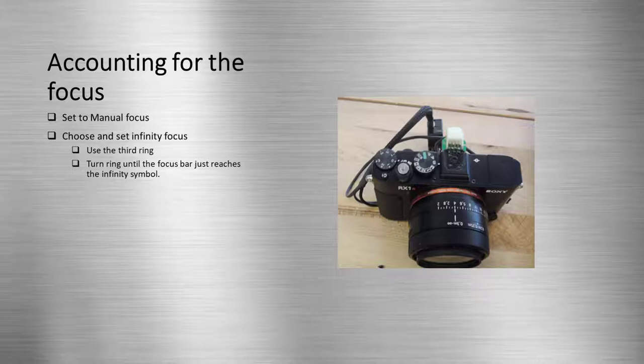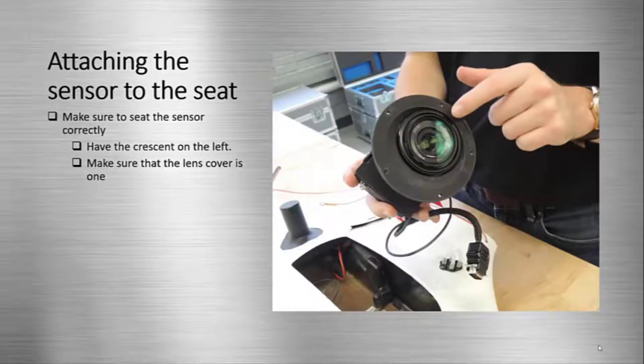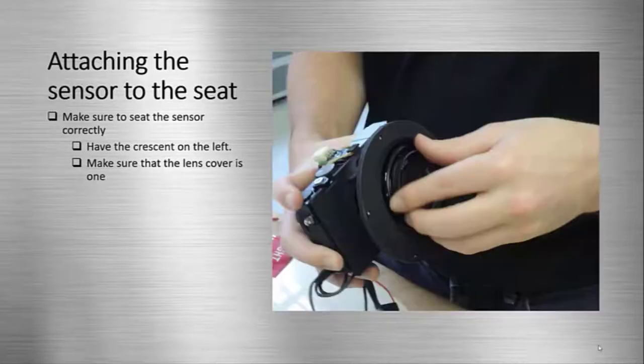To begin installing the sensor, slide it into the seat. Make sure that the crescent indent on the bottom of the sensor seat is on the left side of the lens. Also, make sure that the lens cover is attached and tightened.